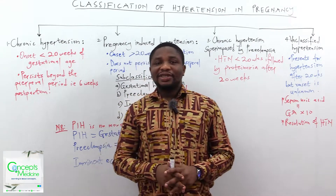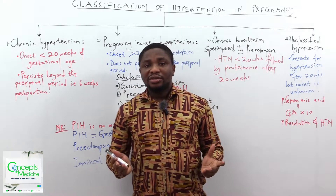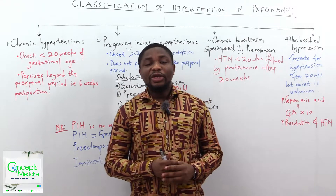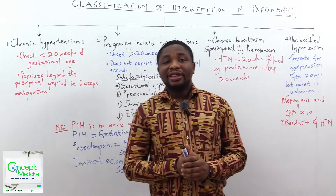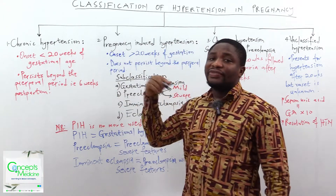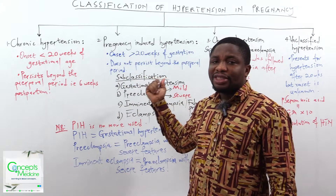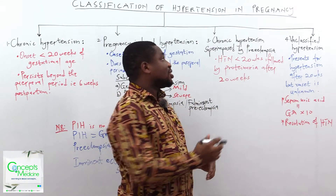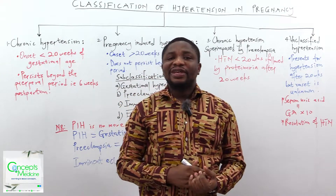Let's move on and look at the classification. We are going to go with the old classification and along the line we'll cover the new guidelines. Hypertension in pregnancy can be classified into four groups: chronic hypertension, pregnancy-induced hypertension, chronic hypertension superimposed by preeclampsia, and unclassified hypertension.